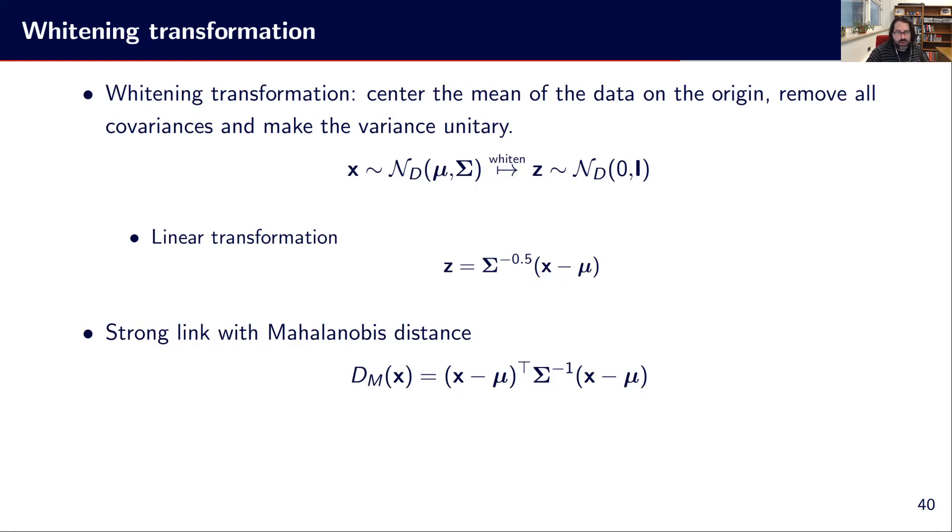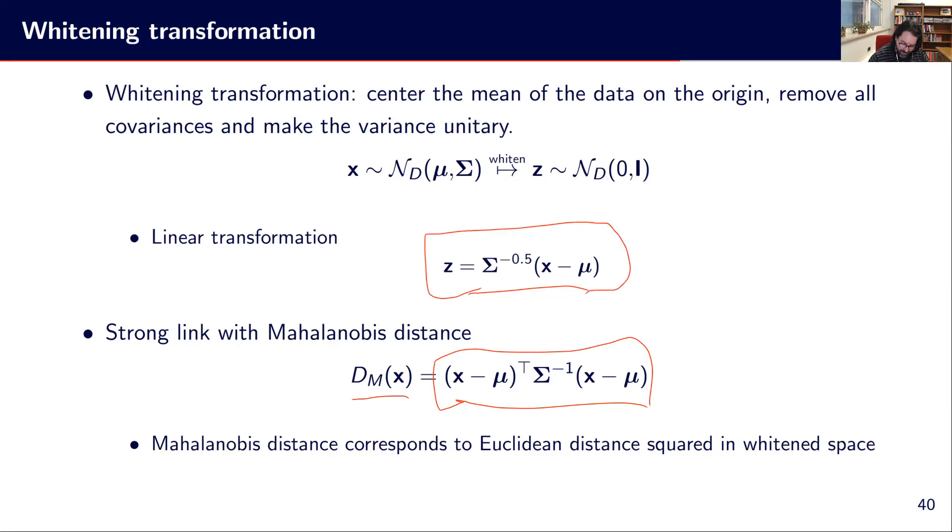This is related to Mahalanobis distance. The Mahalanobis distance is D_M(x) = (x-μ)^T Σ^(-1) (x-μ). If we expand this, it has some look of being the squared root of this thing. So there are some links between the Mahalanobis and what we try to achieve. Basically, the Mahalanobis distance corresponds to the Euclidean distance squared in a whitened space. If we apply the whitening transformation and then measure Euclidean distance, it's similar to computing the Mahalanobis distance from the center to one given point.